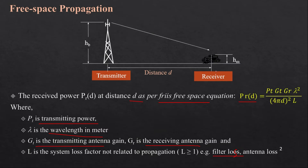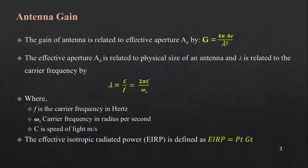We can estimate the received power at a particular location if we know the transmitted power, the gain of the transmitter and receiver, the wavelength of the signal, and the distance between the transmitter and receiver. The antenna gain is related to the effective aperture and is given by G = 4πAe / λ², where λ = c/f and c is the speed of light. The effective aperture is also related to the wavelength of the signal.